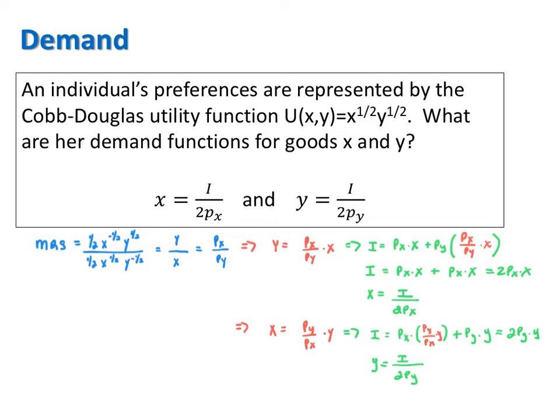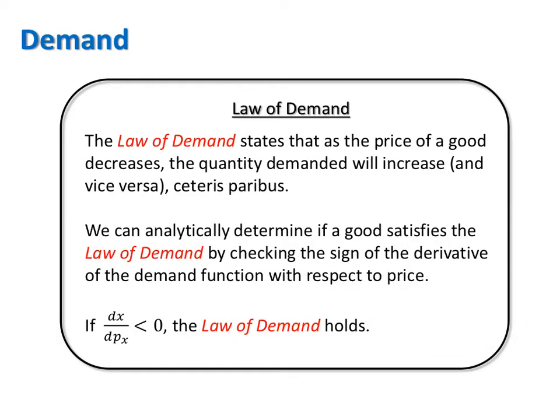Now that we have the demand functions for good x and y, we can find out more about a consumer's preferences for each of these goods. For example, we can determine if a good follows the Law of Demand. The Law of Demand states that as the price of a good decreases, the quantity demanded will increase, and vice versa, ceteris paribus, or holding all else constant. We can analytically determine if a good satisfies the Law of Demand by checking the sign of the derivative of the demand function with respect to the price. If dx/dpx is less than zero, then the Law of Demand holds for good x. More generally, the Law of Demand for a good holds when the derivative of its demand with respect to its own price is negative.